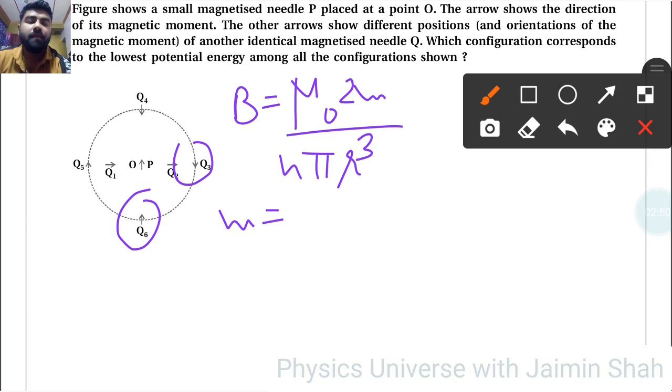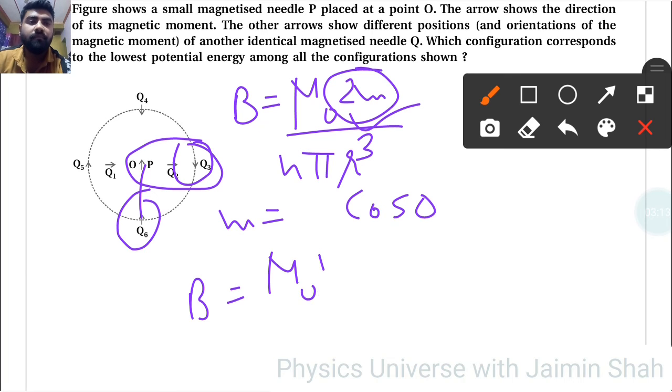Now m is equal to—formula is here that angle between these two, right, so that is cos θ. See here 2m is there, right? So 2m for Q3, right, and Q6. So for Q6, B is equal to—that is equatorial point—so μ₀m upon 4πr³.